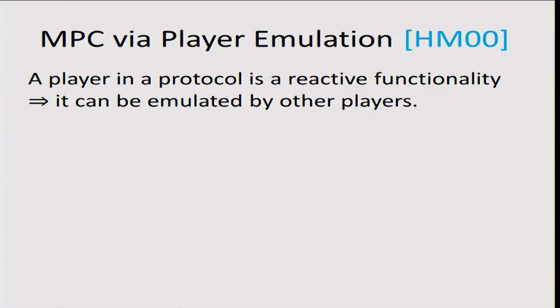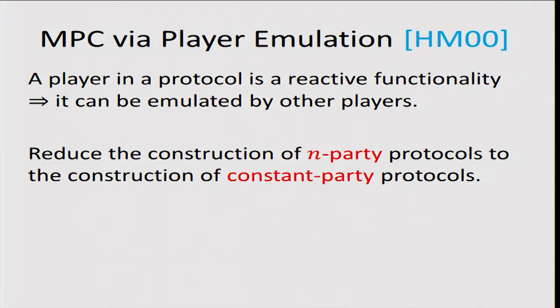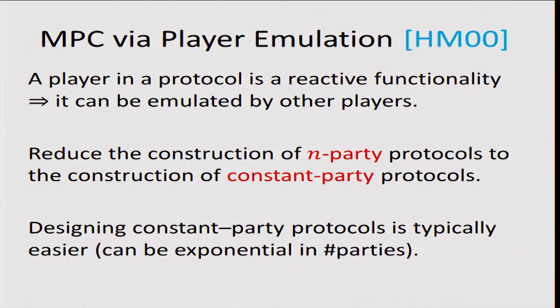Our starting point is the player emulation technique from Hirten-Maurer 2000. The idea is that if you look at a player in a multi-party protocol, that player is just a reactive functionality — a functionality that preserves state — and therefore it can be emulated by other players running an MPC protocol. Using this observation, we show a reduction from constructing an n-party MPC protocol to constructing an MPC protocol for just a constant number of players, which is typically much easier.